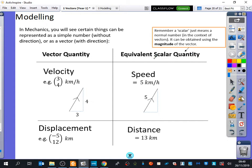Now, a scalar—it says in my orange box up there—a scalar just means a normal number in the context of vectors. It can be obtained using the magnitude of the vector. So if you want to find the scalar version of a vector, you take the magnitude of it and it becomes that scalar version.